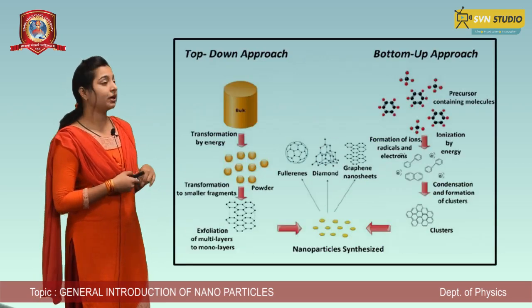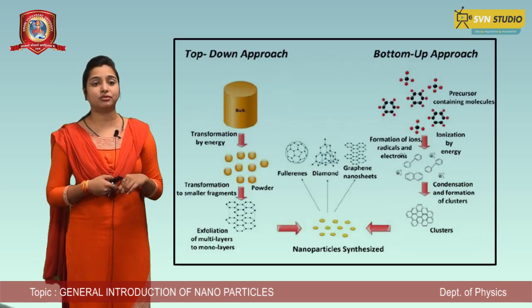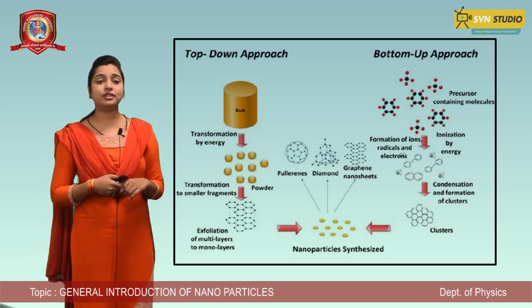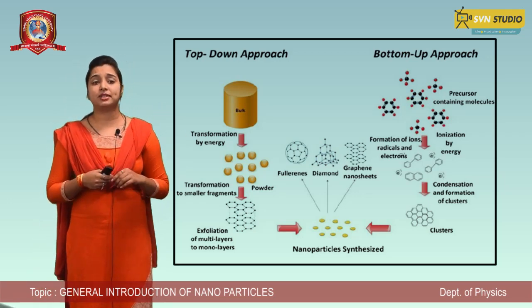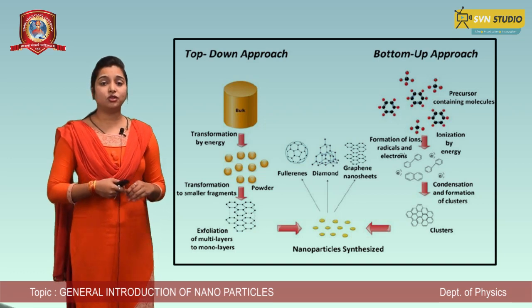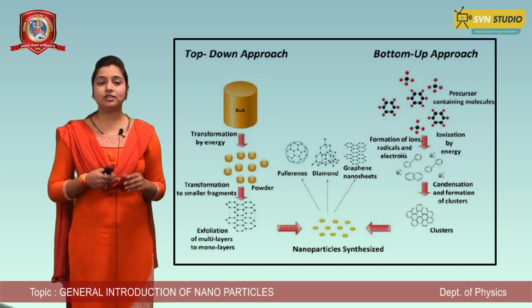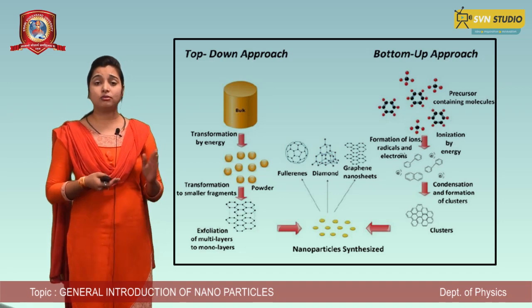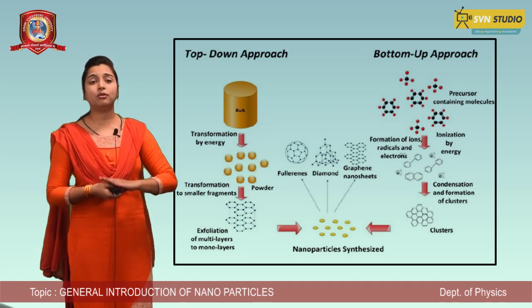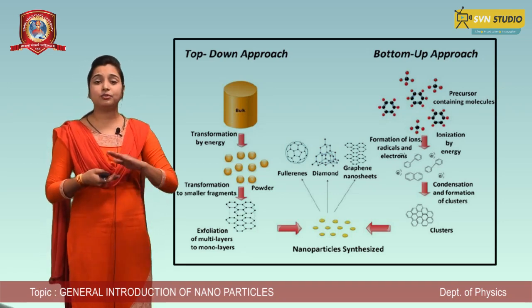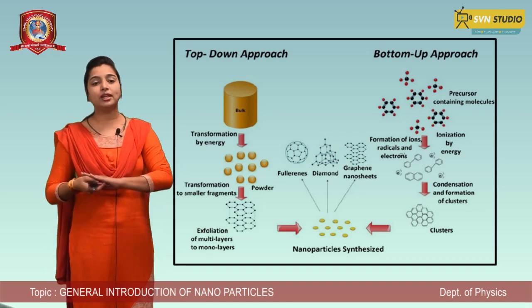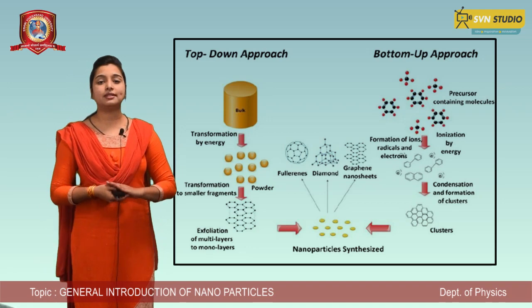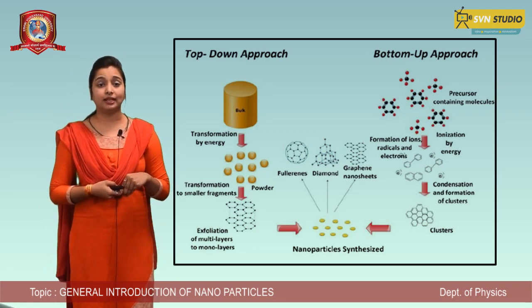In the top-down nanoparticle synthesis process, as the name suggests, it goes from top to bottom. In this process, the bulk substance is given energy, and through that energy it converts into powder form. That powder form is multilayered, which is then converted from multilayer to monolayer through processing, and then from monolayer it is converted into nanoparticles.